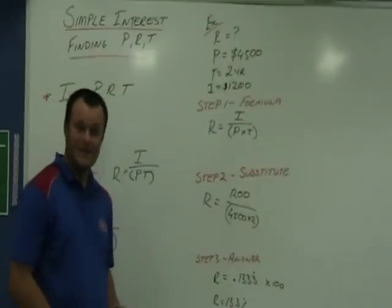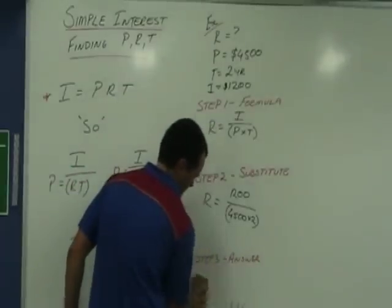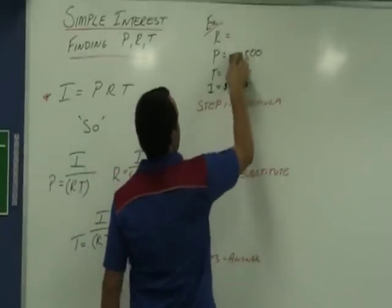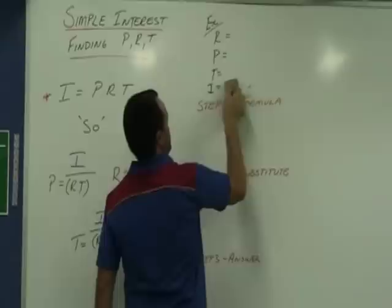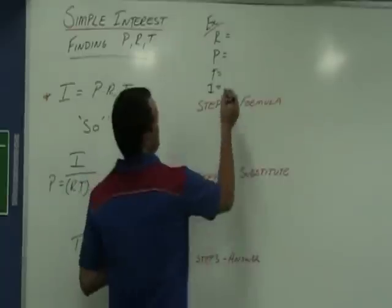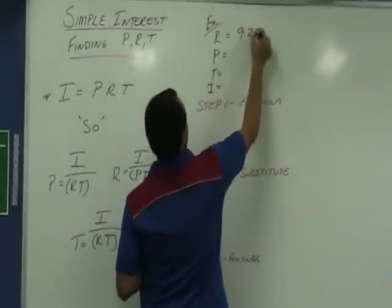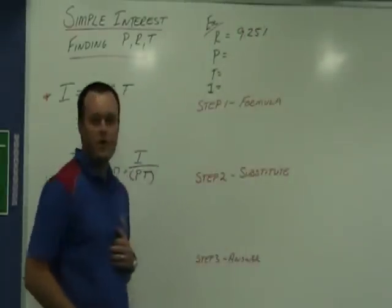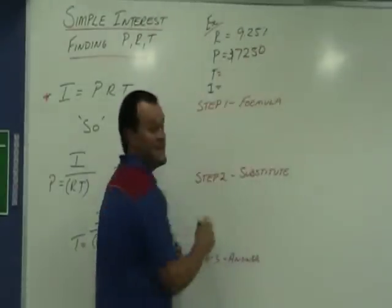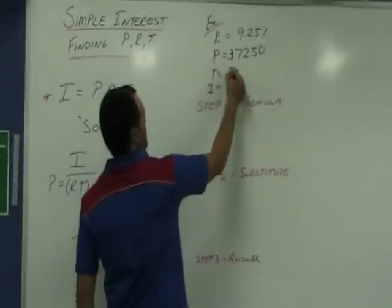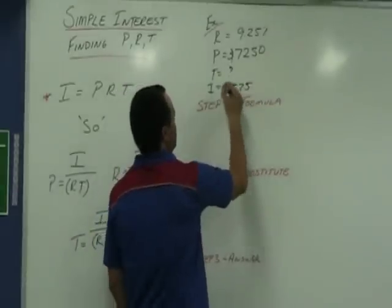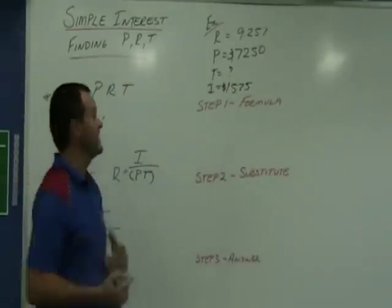Let's look at the last example that we have up there. We're going to get an interest rate of 9.25%. $7,250 is invested. We want to know the time. The interest earned is $1,575. Nice and simple. Let's have a look at it.